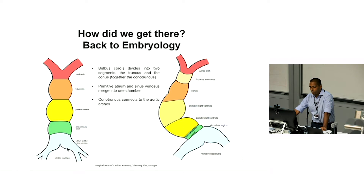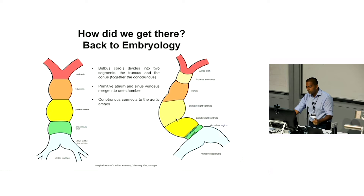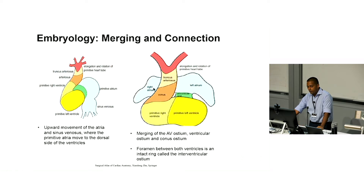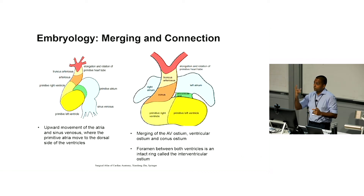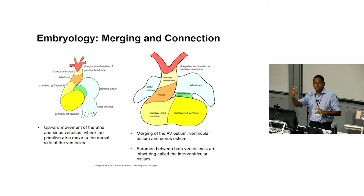Straight away you see something needs to change — the atrium is at the bottom and needs to get up to the top. So what happens is the tube starts to bend; it's called D-looping, and it starts to turn, and keeps on turning. Eventually you want to get to the stage where there's an upward movement of the atria and the sinus venosus, so that the primitive atria are on the dorsal side of the ventricle — superior to the ventricles, but also posterior. That's where it comes from: when the heart is in anatomical position, the left atrium is that true posterior structure.